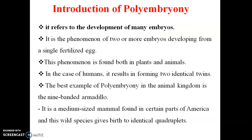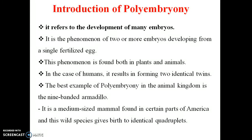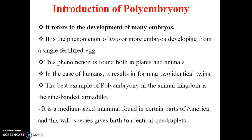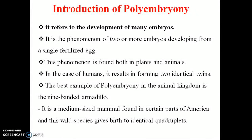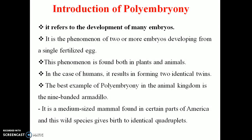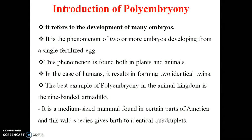Polyembryony refers to development of many embryos. This is a phenomenon in which 2 or more embryos develop from a single fertilized egg. This phenomenon occurs in both plants and animals. In the case of humans, we talk about identical twins as an example of polyembryony. Another example from the animal kingdom is the nine-banded armadillo.